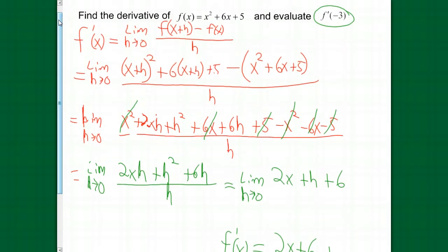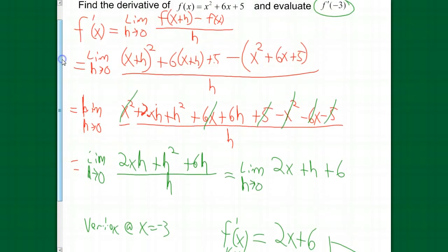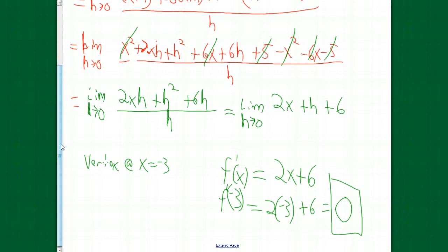The vertex of this function is, if you do negative b over 2a, that's negative 6 over 2 times 1. We're looking at a vertex at x equals negative 3. Now, when you plug in negative 3, we're going to get 9 minus 18. So, negative 9 plus 5. We're looking at a negative 4. So, our vertex is at the point negative 3, negative 4.